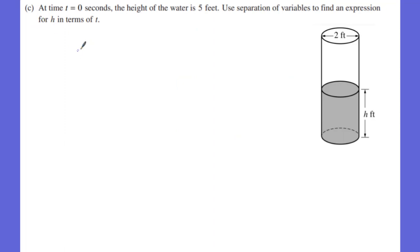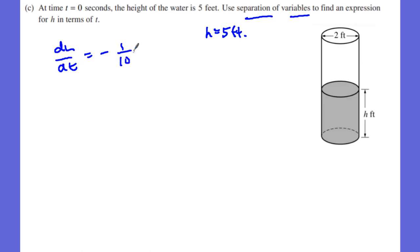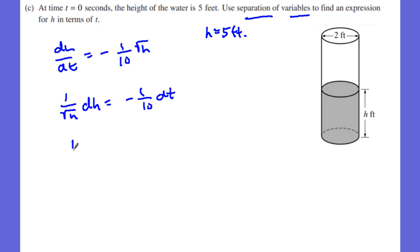Part C says when the height is 5 feet, use separation of variables — that means we're integrating. Starting from dH/dT = -1/10 √h, I separate variables to get (1/√h) dH = -1/10 dt, or h^(-1/2) dH = -1/10 dt. This is set up to integrate from 0 to time t.